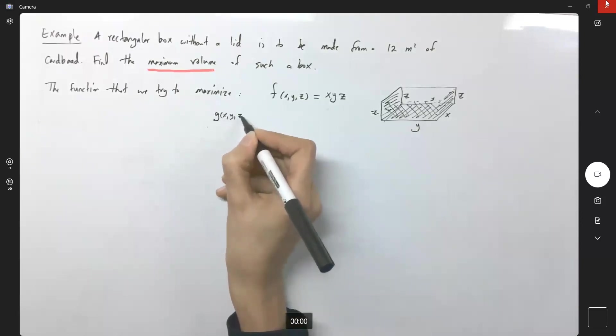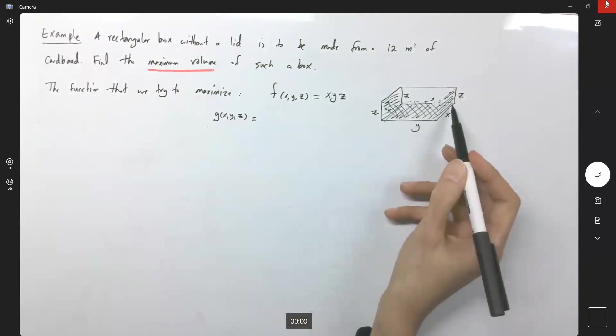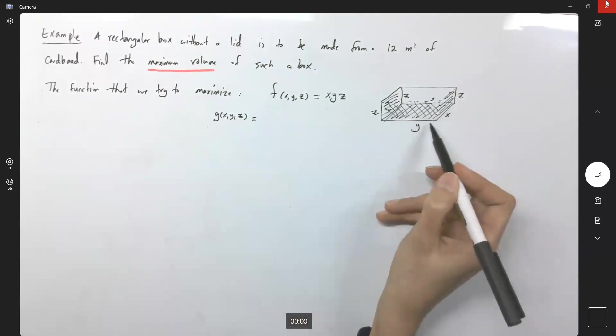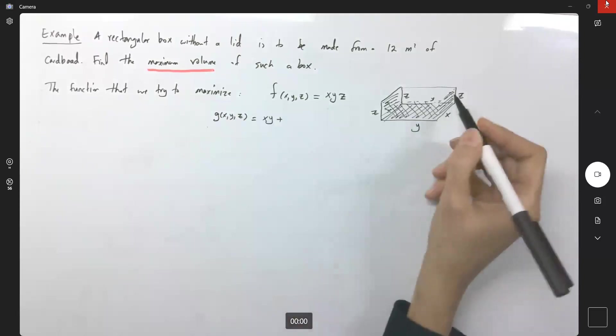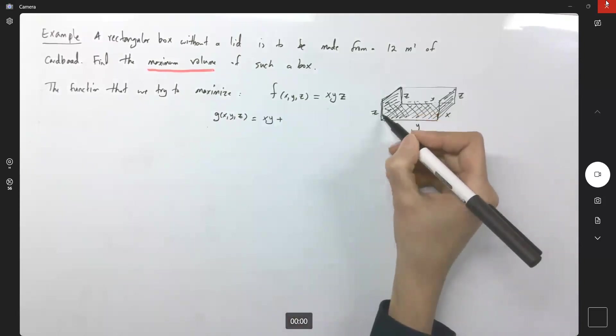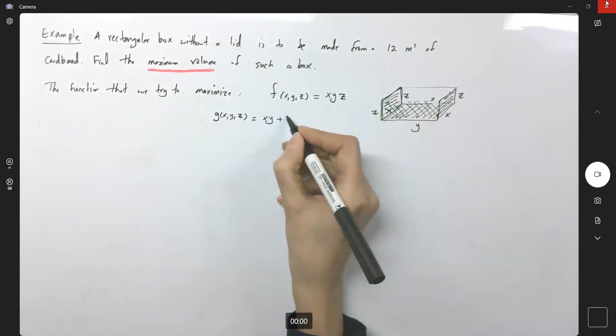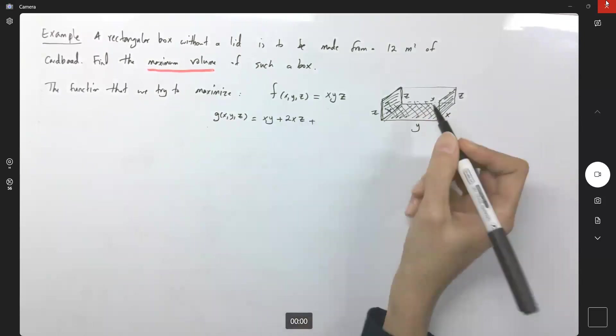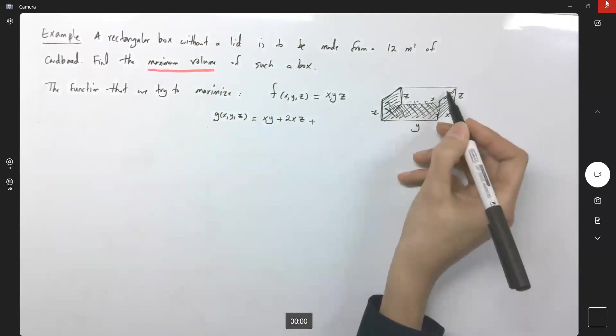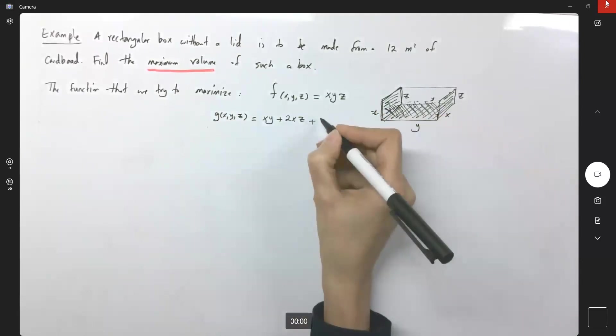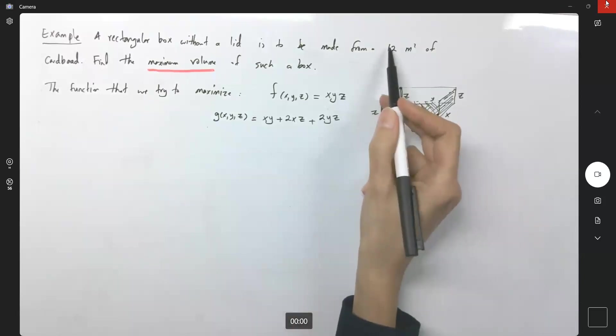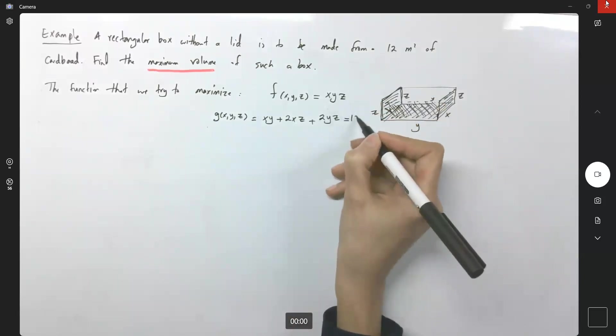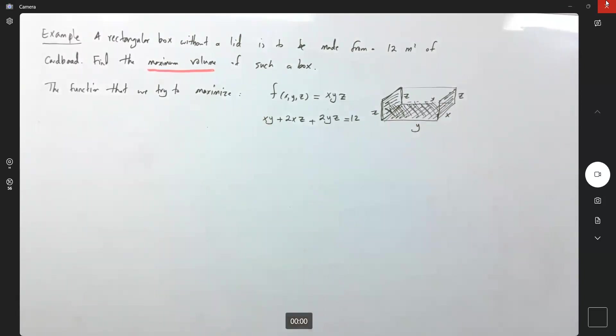Let me just shade it over here and there. So let us write it down. G of x, y, and z. Again guys, we only have one base, so we only have one x, y. Plus you have two sides x, z. So two x, z plus two more sides y, z. One of them is here and the other one is on the back. So two y, z. It's equal to what? It's equal to 12. So this is my constraint.